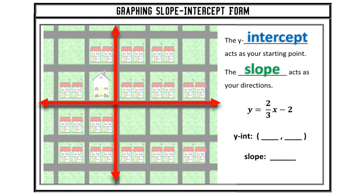Notice that this equation is already in slope-intercept form: y equals 2/3 x minus 2, which is y equals mx plus b. Our y-intercept is always at the end by itself — it's a constant. Our slope is always connected to the x; it's the coefficient on x. My y-intercept, or b, is negative 2, so the y-intercept as an ordered pair is (0, negative 2), since y-intercepts always have 0 for their x-value. This is where I start to plot my line.